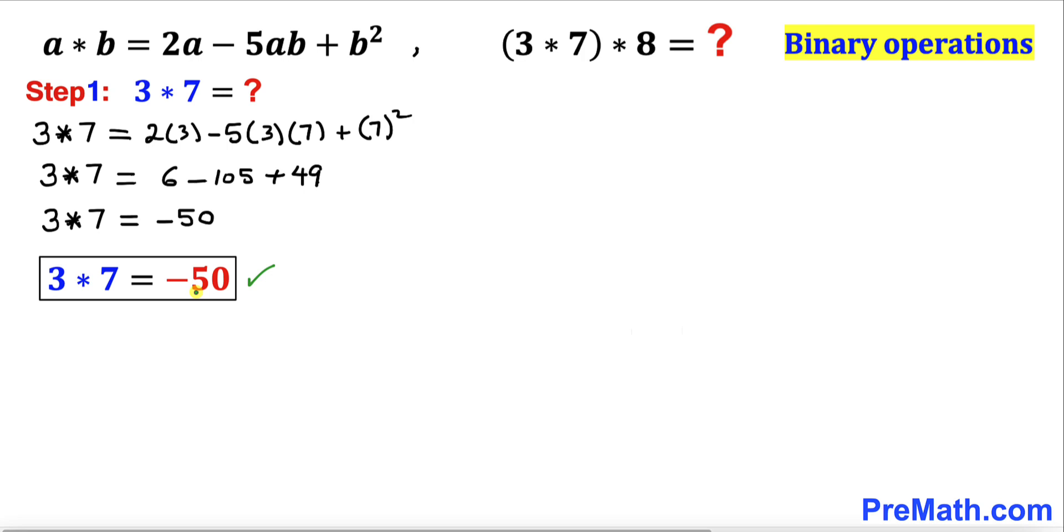And here's our next step. We are going to find now the value of this whole thing, 3 star 7 and then star 8. But we already figured out this 3 star 7 value as negative 50 from our previous step.